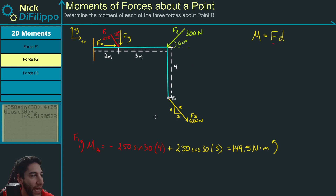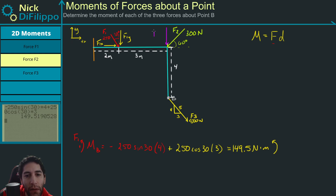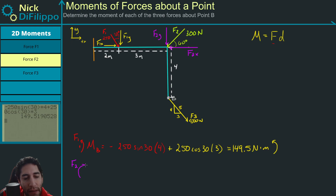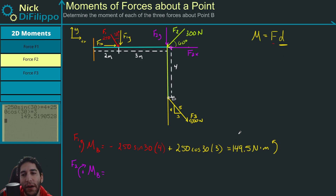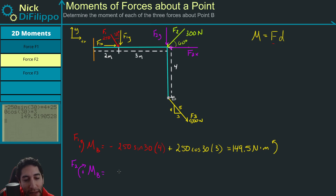Now let's look at force F2. We need to break it into a Y component pointing down and an X component pointing to the left, and examine each individually. This time let's rotate in the clockwise direction. For F2Y, when we extend it, we see it goes right through point B — meaning there is no perpendicular distance, so F2Y produces no moment about point B: it's zero.